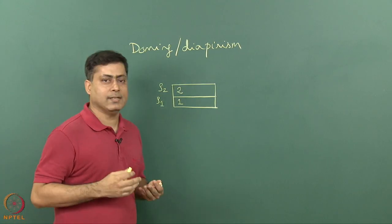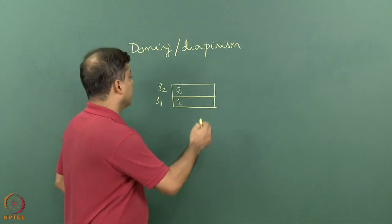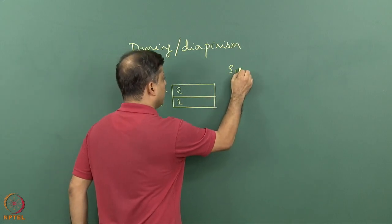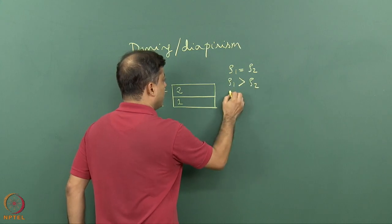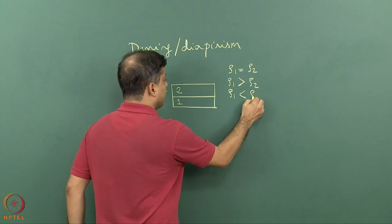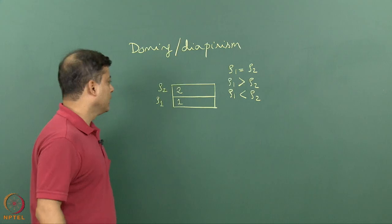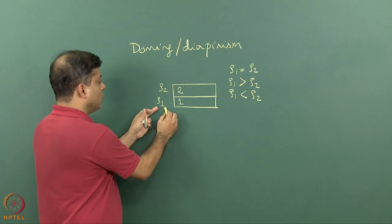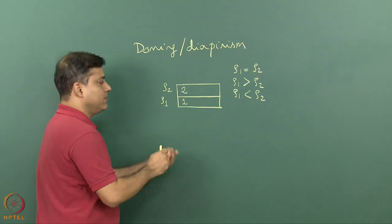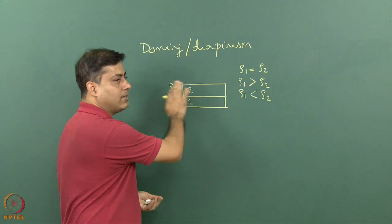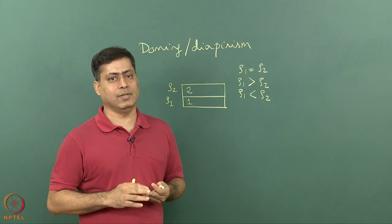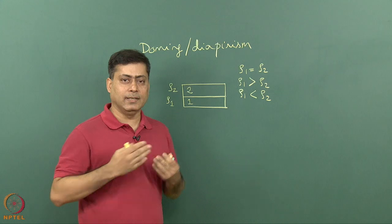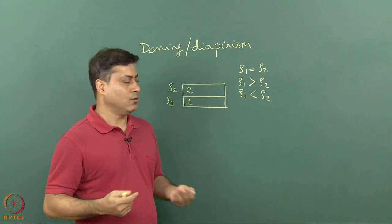In nature several possibilities exist: rho one equal to rho two, rho one more than rho two, and rho one less than rho two. In case rho one is more than rho two, that means a denser fluid at the bottom and a lighter fluid at the top. In that case it is a stable condition. These fluids will remain in this manner for a long time.